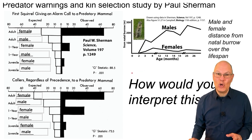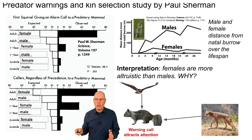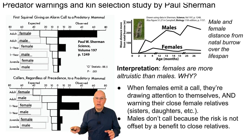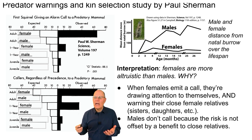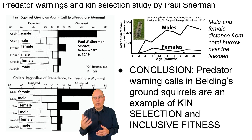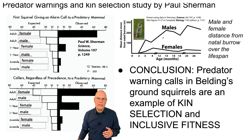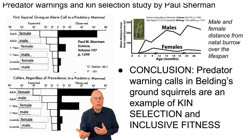Sherman's interpretation is that females are more altruistic than males. But why would that be? Remember that a warning call attracts attention. When females emit a call, they're drawing attention to themselves and warning their close female relatives — their sisters, their daughters, their female cousins. The males don't call because the risk to themselves is not offset by a benefit to their close relatives. The conclusion is that predator warnings in Belding's Ground Squirrels are an example of kin selection and inclusive fitness. What you should take away is the way we used claim, evidence, and reasoning to connect the dispersal data to the calling data to conclude what we did about kin selection and inclusive fitness.